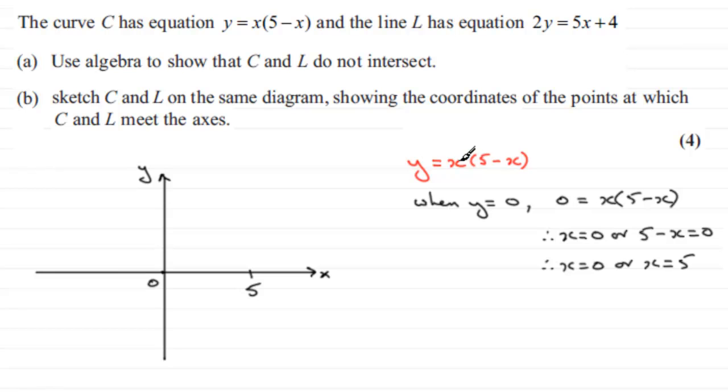It's a negative x squared graph. If you expand this, you've got 5x minus x squared. So being a negative x squared graph, we should know that this is parabolic in shape, but it is an upside down parabola, something like that.